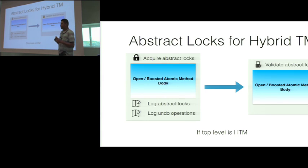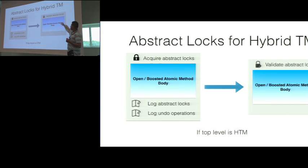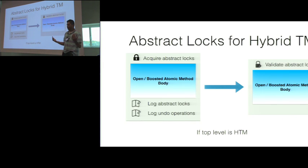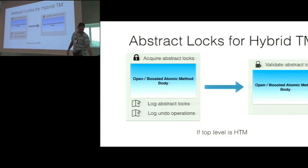When running a hybrid transaction with HTM at the top level, instead of acquiring and logging the abstract locks in nested transactions, you can simply validate the abstract locks. This optimization is actually necessary: if two hardware transactions both doing a read-only transaction go ahead and acquire the abstract lock, that is actually a write operation on the abstract lock data structure, which can cause a conflict between two open nested transactions running in hardware. So to mitigate that, we just do a validation of the abstract lock.